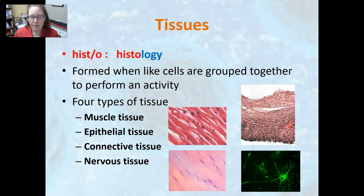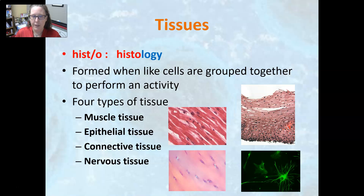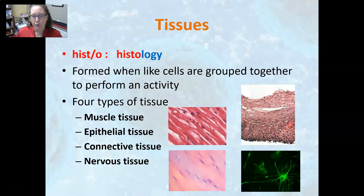Next is tissue. Histo is the combining form, hist is the root word, forming histology — the study of tissue. Tissues are formed when like cells are grouped together to perform an activity. There are four major types of tissue. There is muscle tissue — skeletal muscle that does movement, cardiac muscle that moves blood in our system, and smooth muscle that can move things or line organs.